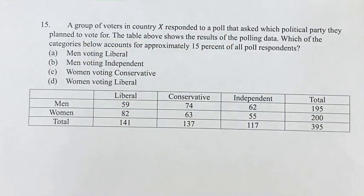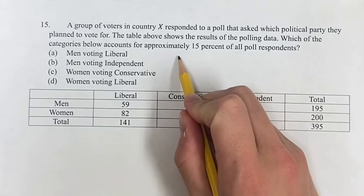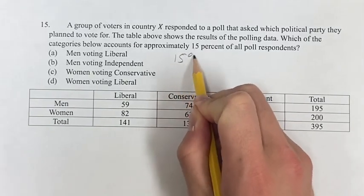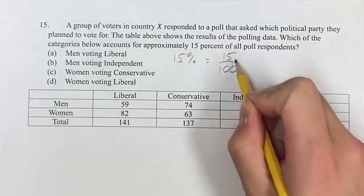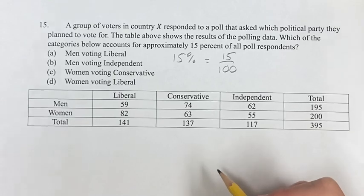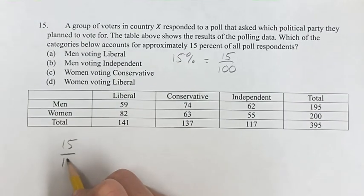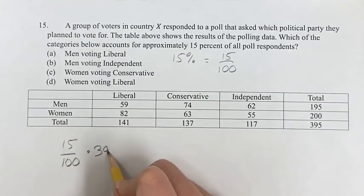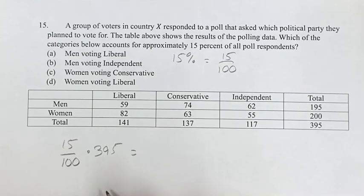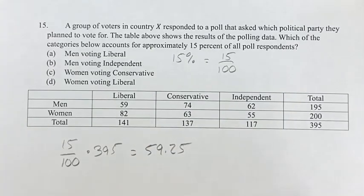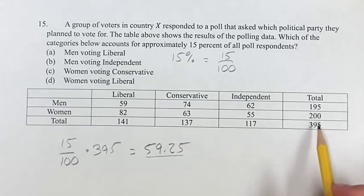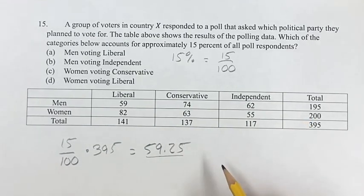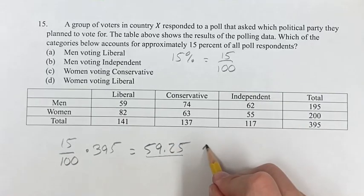Before looking at any specific categories, let's find what 15% of the poll respondents actually is. A percentage is just a number out of 100, so this is 15 divided by 100. We multiply 15/100 times 395, which gives us 59.25. You can't have a quarter of a person, so let's round this to 59.